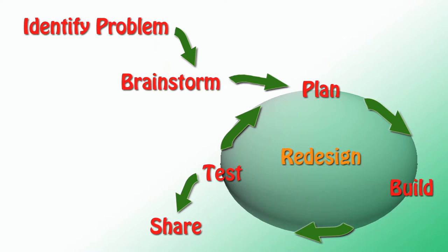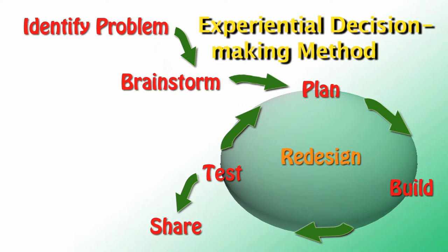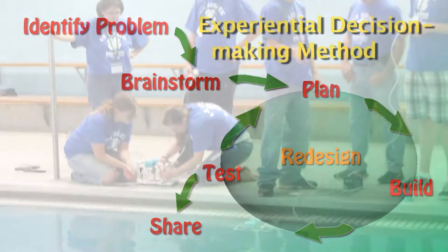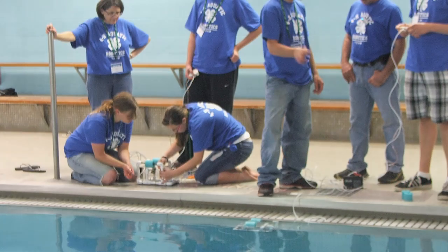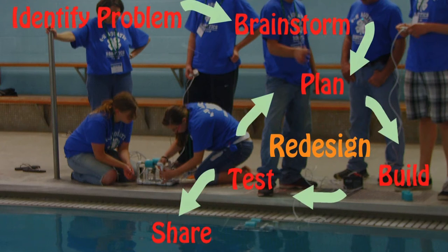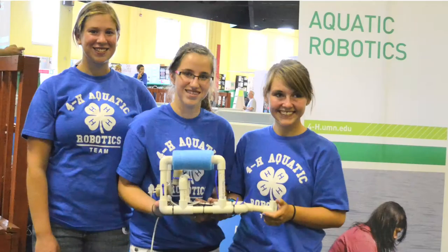In 4-H, doing engineering means using an experiential decision-making method. This method is core to the design process. Once youth learn and understand the process, they can apply it to design and build solutions to many other problems and issues that they will face in school, their career, and life.